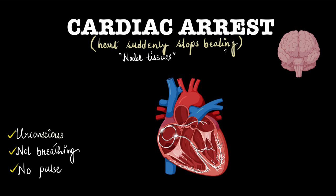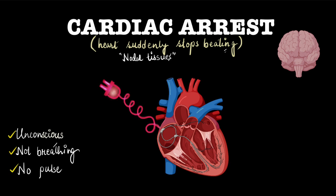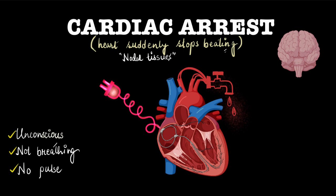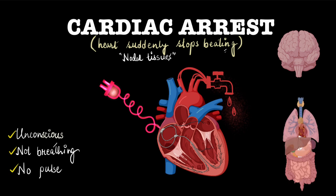Cardiac arrest is the condition when this whole electrical system suddenly collapses. When the heart does not have its own electrical supply, it fails to do its job. And what's the job of the heart? To supply blood to the whole body — to the brain and the rest of the body. Here I have made the vital organs. So no supply of electricity means no supply of blood, both to the brain and the rest of the body.